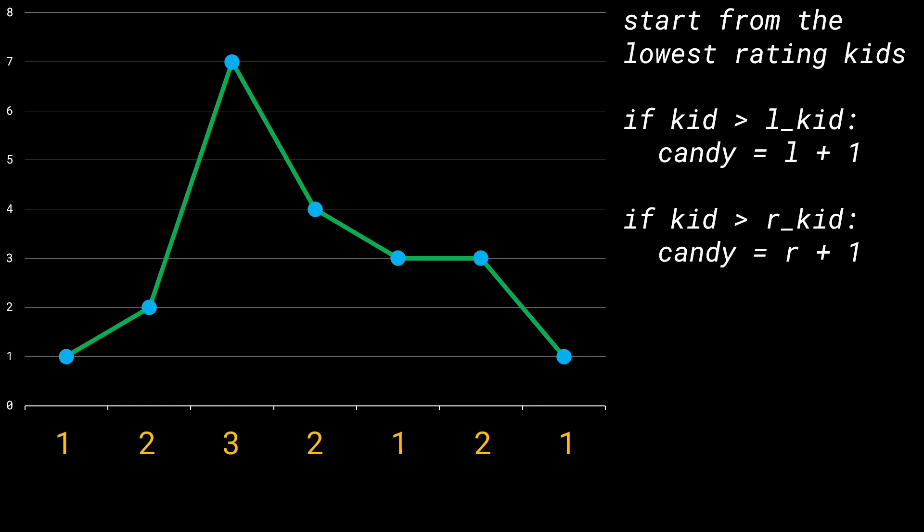So to summarize the logic: we start from the lowest rating kids and gradually move up the ladder — from the worst kids to the best kids. Each time, we look at the left and the right neighbor and assign one more candy than the relevant neighbor if needed.